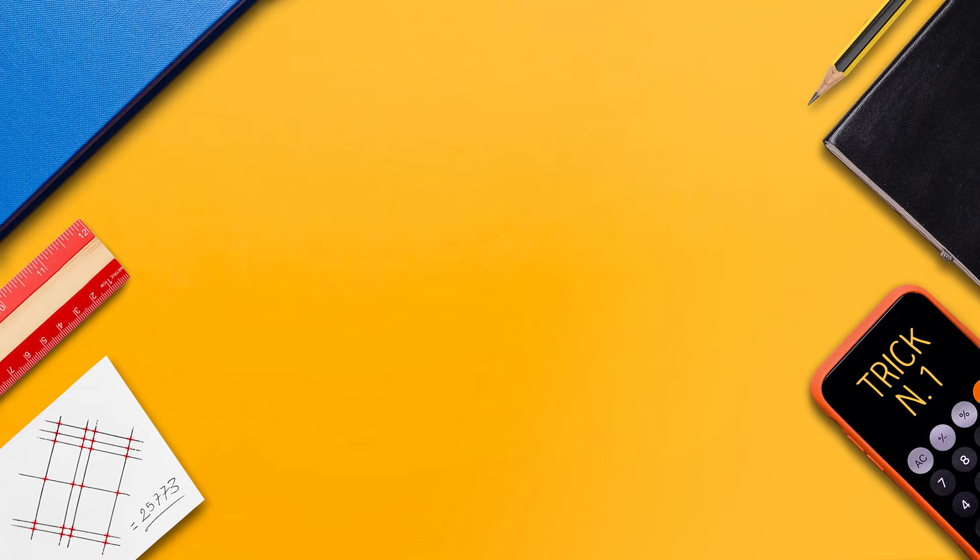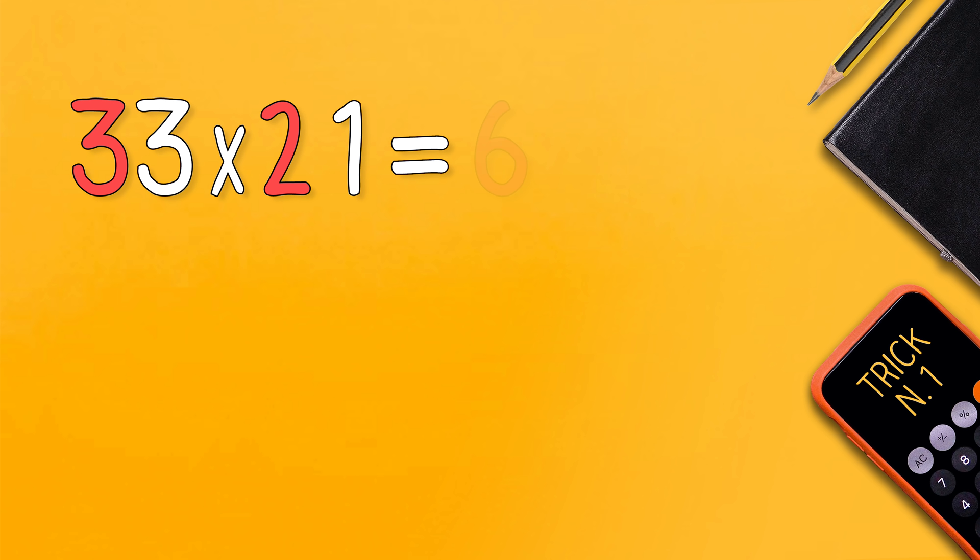Let's try for example 33 by 21. First you need to multiply the first digits of the numbers and write the result on the right. Then we leave a blank space after that and to find the last number of the answer we simply need to multiply the last digits of the numbers.